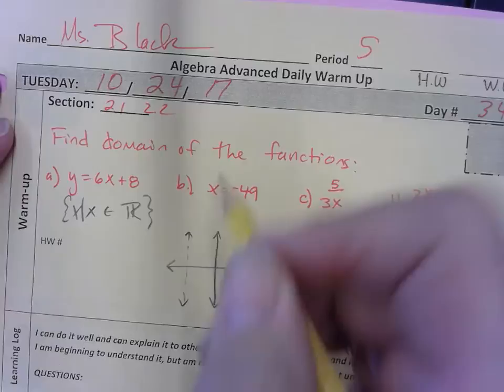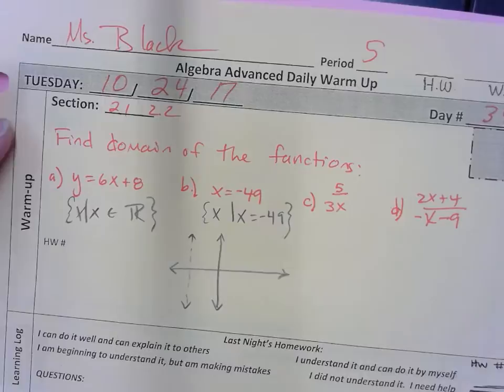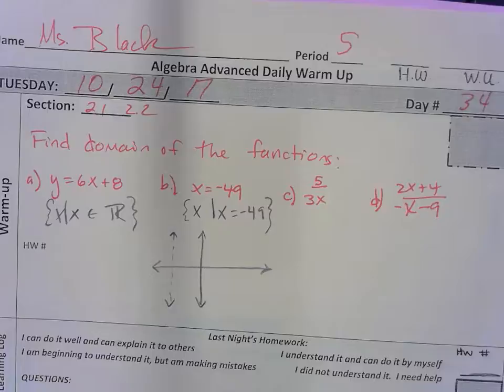Exactly. So if we drew a graph of this, it would look like this. The only X possible here is when X is equal to negative 49. Does that make sense? Yep.